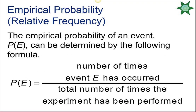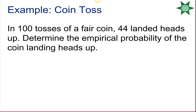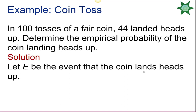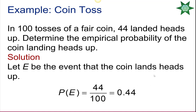When working with empirical probability, to find the probability of event A, we take the number of times event A occurred and divide it by the number of times we performed the experiment. For instance, if we tossed a coin 100 times and got 44 heads, the empirical probability of getting a head would be 44 over 100, or 0.44.